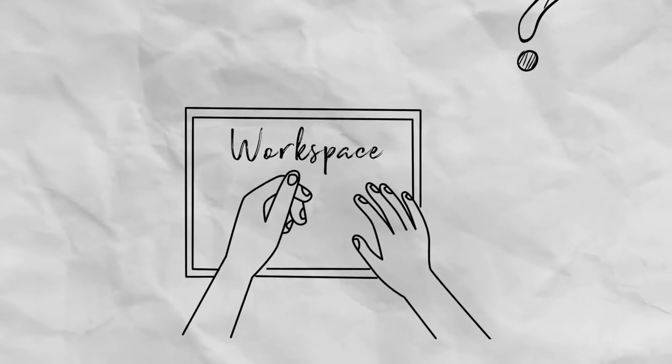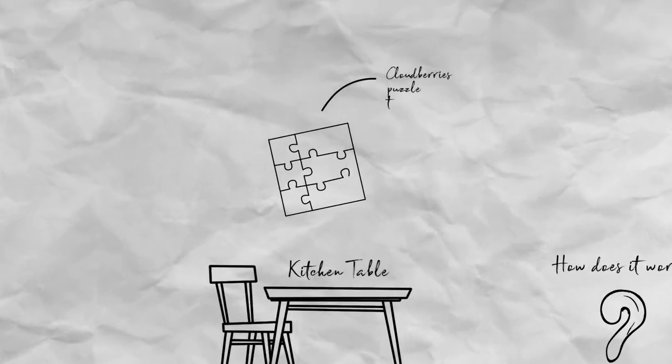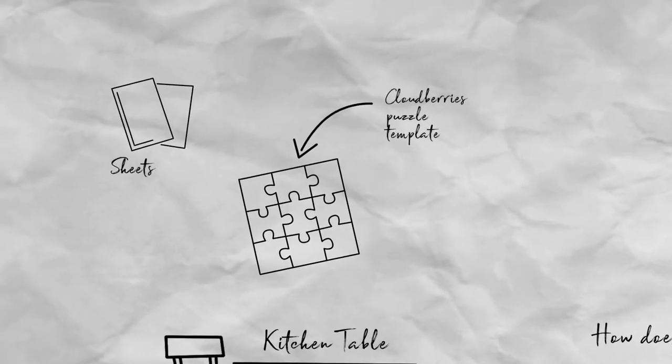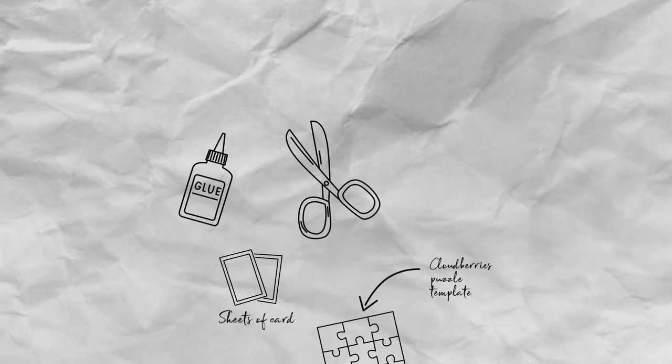A comfortable workspace where you can prepare the puzzle, like a kitchen table. One printed Cloudberries puzzle template. Two to three sheets of card. A pair of scissors. And a bottle of craft glue or PVA.